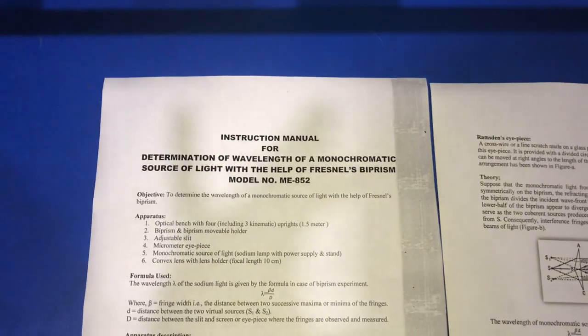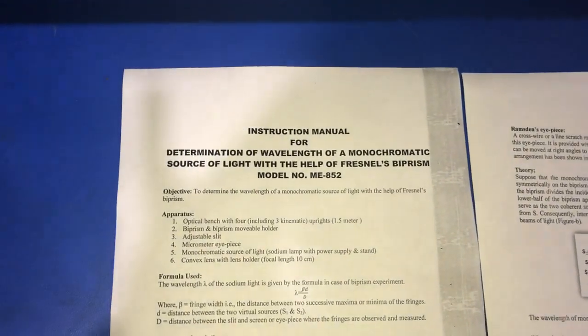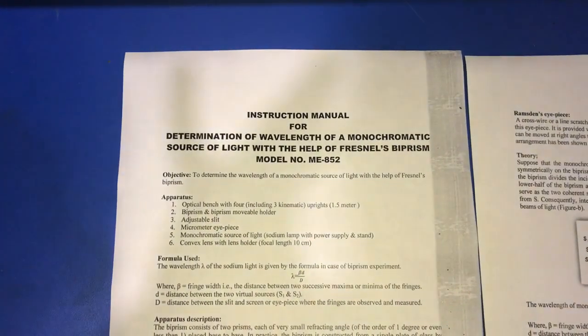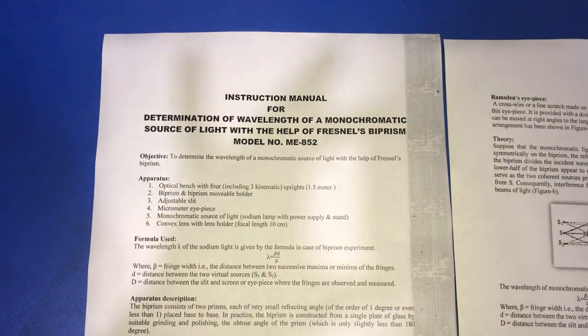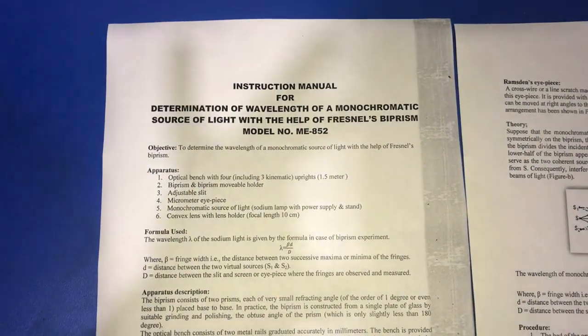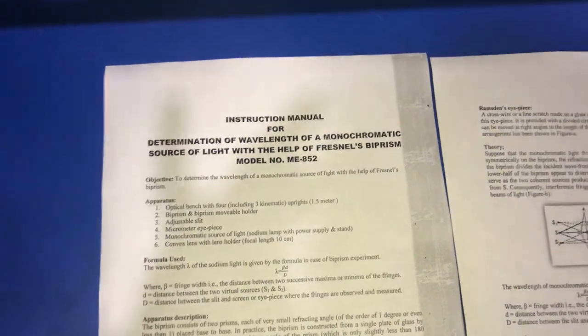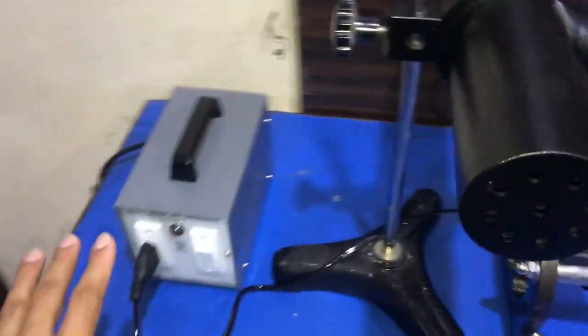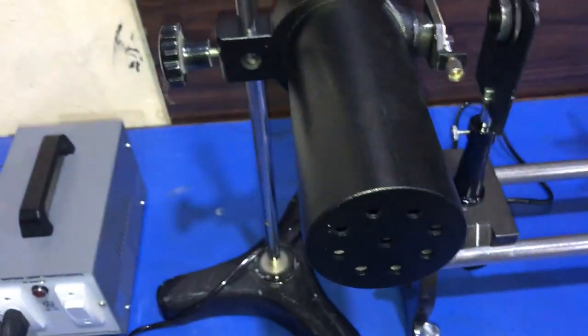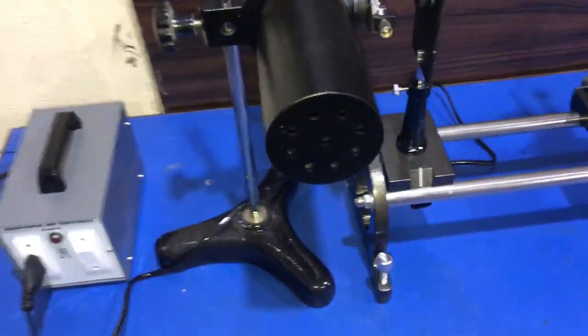Hello everyone, today I'm going to demonstrate how to determine the wavelength of monochromatic light with the help of a Fresnel biprism. In order to perform this experiment we require a monochromatic light source, which is a sodium light source.